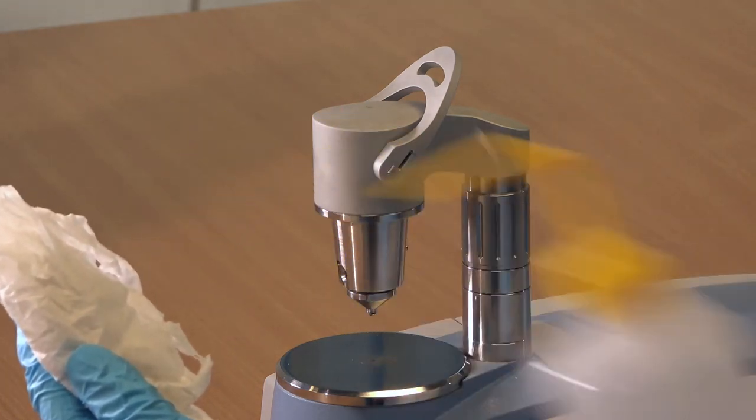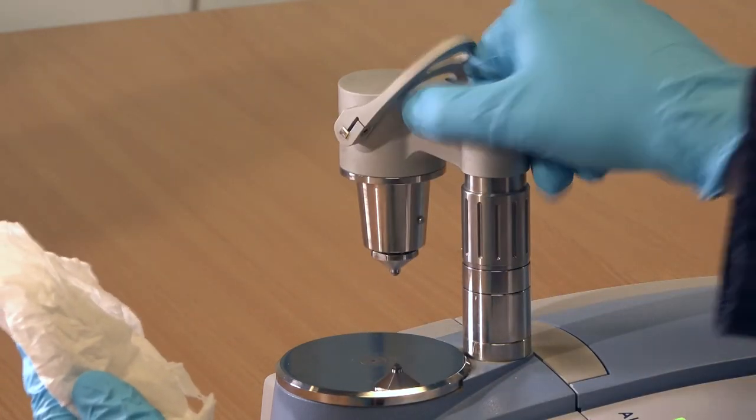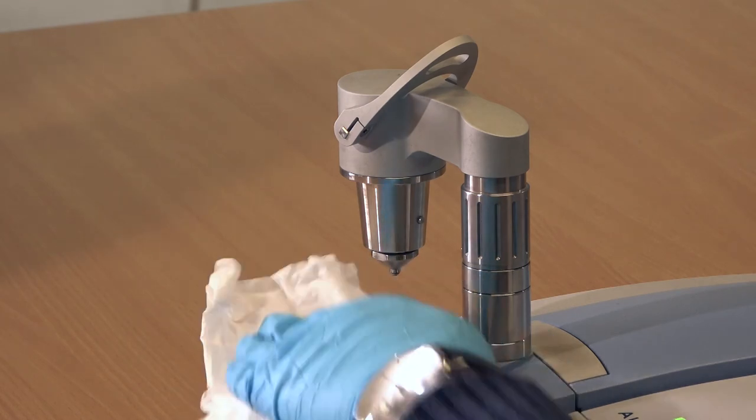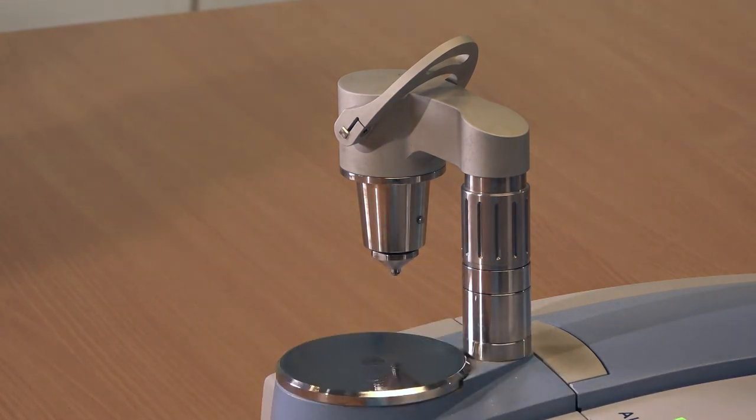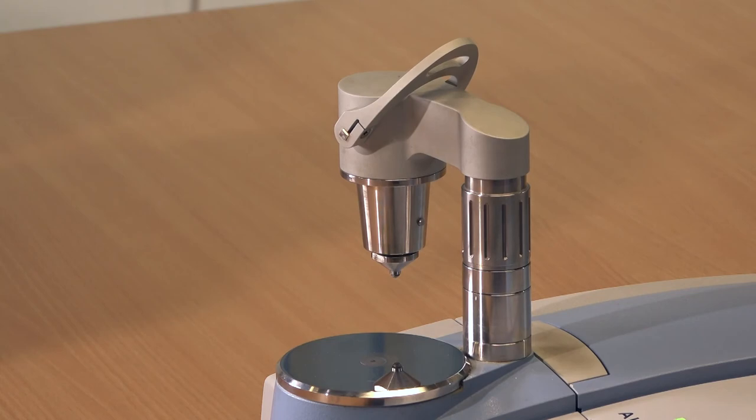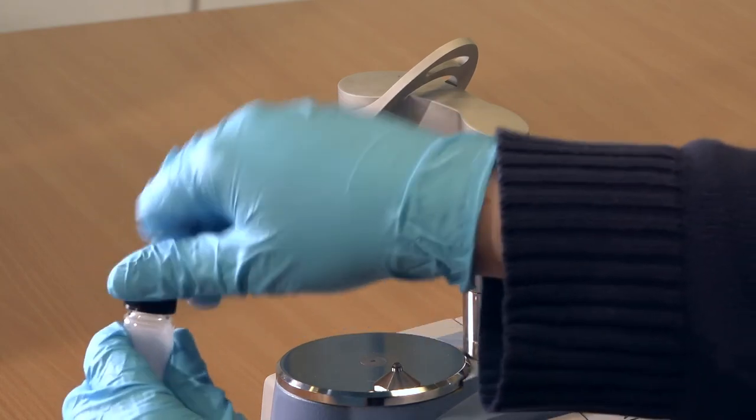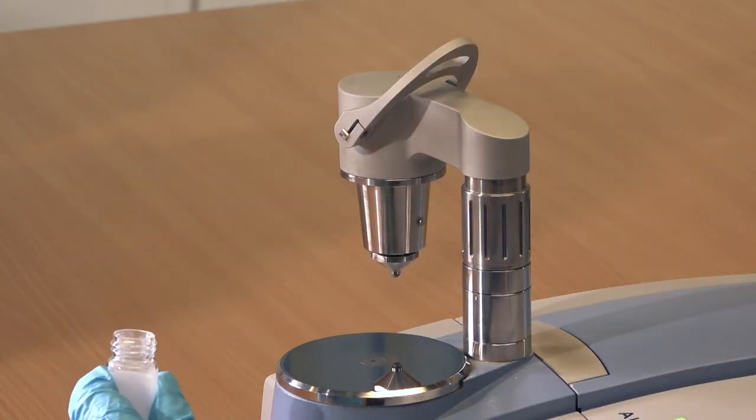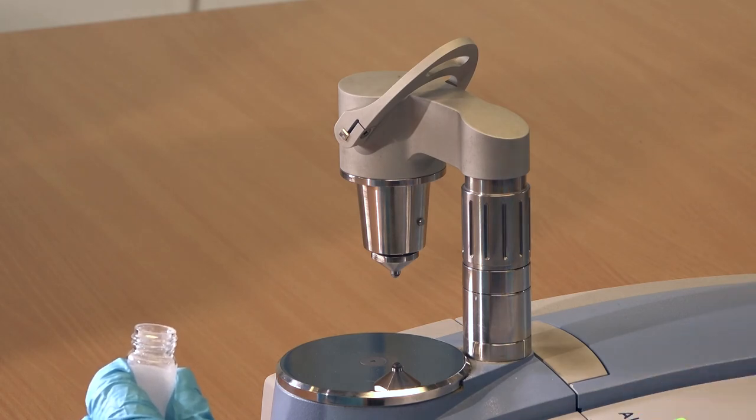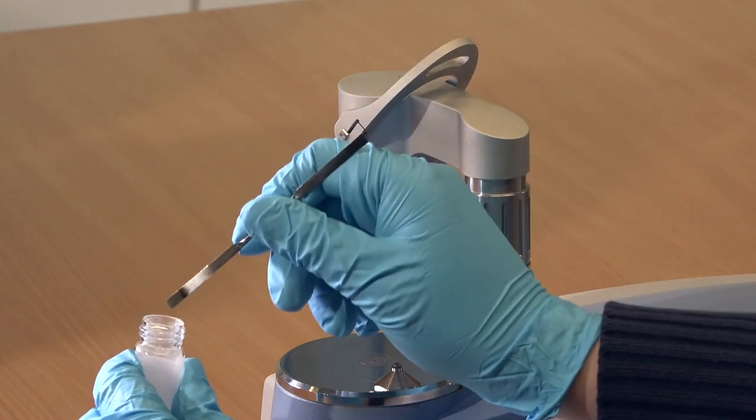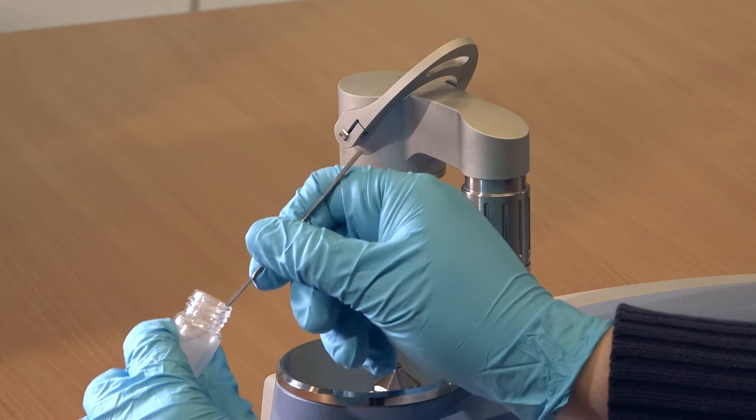This should be done between every sample measurement and is important to ensure no cross-contamination happens between samples. Making sure the arm is out of the way, take a small amount of solid from the sample vials provided using a micro spatula. A micro spatula tip's worth is enough to ensure the square central window is covered as shown.